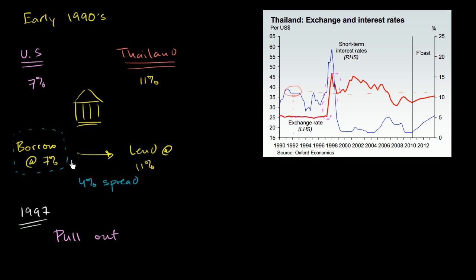If enough people jumped on the bandwagon, the Thai central bank would literally run out of reserves. And the reason this is so risky: once they run out of reserves, what happens to the person who had borrowed in dollars and lent in Thailand? There was a massive devaluation — overnight the value of the Thai baht relative to the dollar almost went in half. So all of a sudden you borrowed in a currency that is now worth twice as much relative to your own. Your debts have doubled, and given that banks tend to be highly leveraged, you're probably going to go out of business.